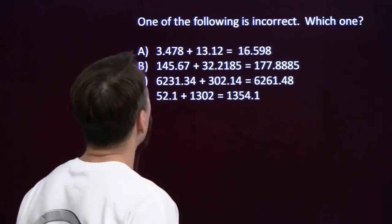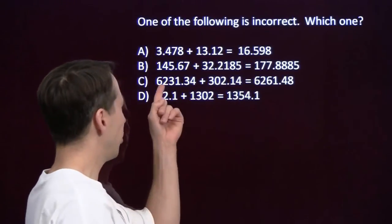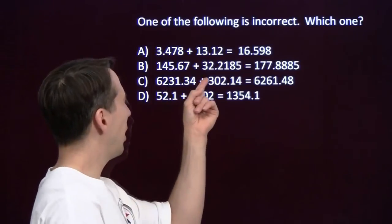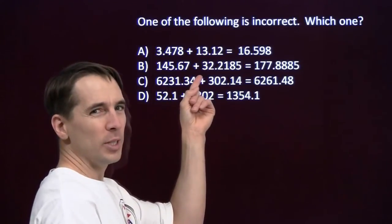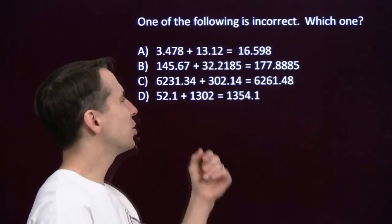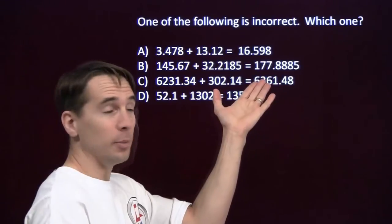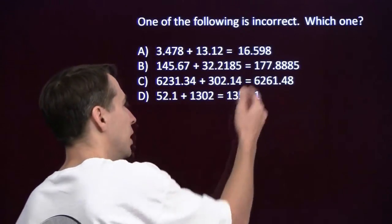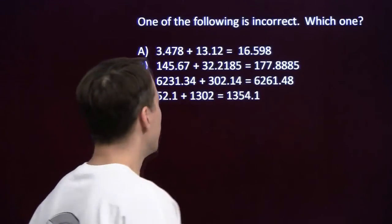Next problem: I've got a number that's around 145.7, and I'm adding a number that's around 32.2. I should get a number that's around 177.9. Calculator probably got that one right too.